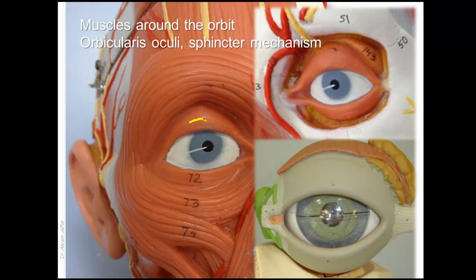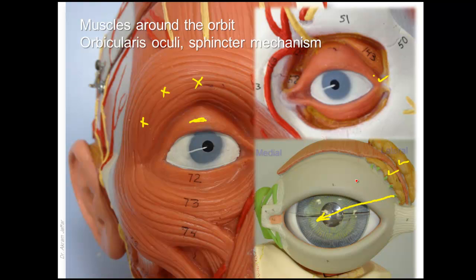The palpebral part of orbicularis oculi closes the eyes gently, as in sleeping or blinking. The orbital part, the largest part, lowers the eyebrows to shade the eye from bright light. When both parts act together, they close the eye forcibly, as during a dust storm. In normal closing of the eye, the lateral part of the upper eyelid comes down before the medial part. If you place your fingertip on the lateral canthus and blink, you will notice the upper eyelid moves medially as it moves downward. This helps spread lacrimal secretion from the lacrimal gland — located in the upper lateral part of the orbit — toward the medial side, where the lacrimal fluid is taken up by the lacrimal canaliculi and into the lacrimal sac.